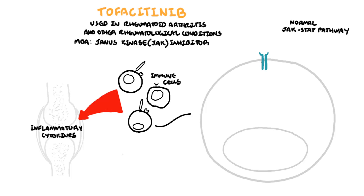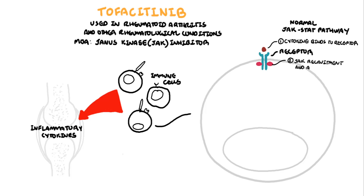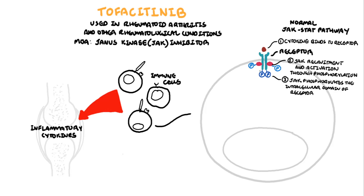A normal JAK-STAT pathway involves a cytokine or ligand binding onto a receptor. JAK is recruited intracellularly and activates a number of phosphorylation events. Activated JAK then phosphorylates the intracellular domain of the receptor first, and STAT proteins dock and become phosphorylated by JAK.